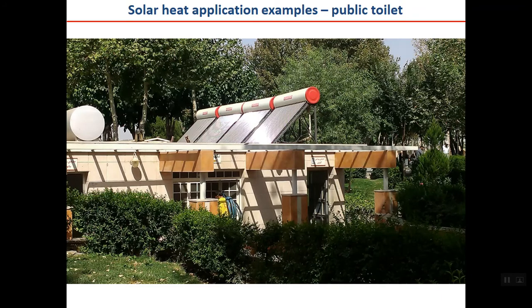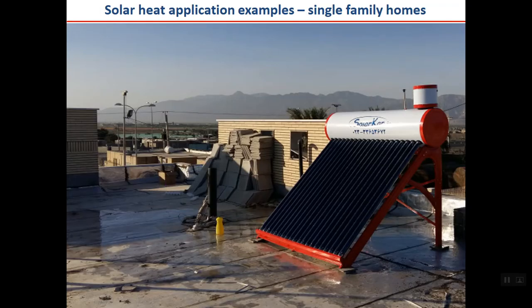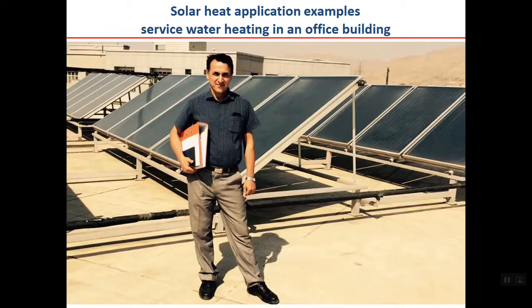Here you can see a public toilet in Tehran where solar water heaters are used on the roof — an application in a rural area. This is a public bath in a village where solar water heaters are installed. They may be used for single or multi-family houses. The owner installed a solar water heater on the roof to produce hot water for service water heating. A large social housing program in Brazil has many thermosiphon systems installed.